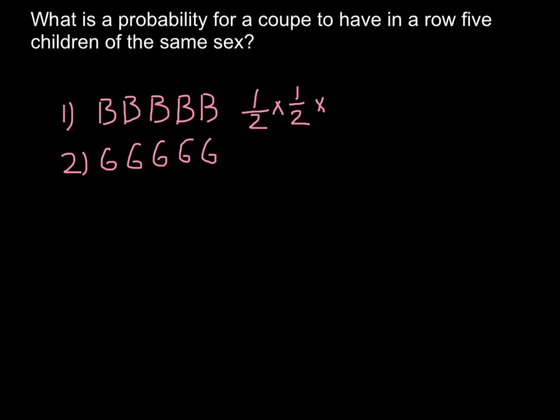So every time we have to multiply by one half. So as long as the question is about five children of the same sex, we have to multiply by one half every time. So if we multiply one half by one half, we are going to get one quarter. And multiplied by one half, we are going to get one eighth. Multiplied by one half, one sixteenth. And multiplied by one half, one over 32.